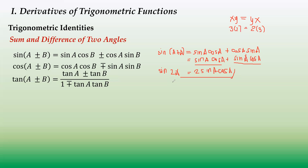For tangent of a plus a, using the tangent sum formula gives tangent a plus tangent a all over 1 minus tangent a times tangent a, which simplifies to 2 tangent a over 1 minus tangent squared a — and that is tangent of 2a. So the sum and difference formulas are one way to derive the double angle formulas.